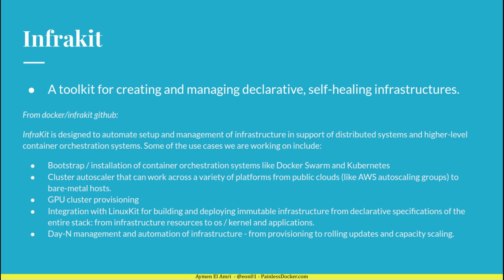The third component is InfraKit, a toolkit for creating and managing declarative, immutable, and self-healing infrastructures. InfraKit is designed to automate the setup and management of infrastructure in support of distributed systems and high-level container orchestration systems. It's useful for use cases like bootstrapping orchestration tools like Docker Swarm or Kubernetes, and creating auto-scaling clusters across public clouds like AWS and its auto-scaling groups.